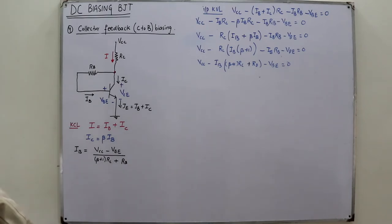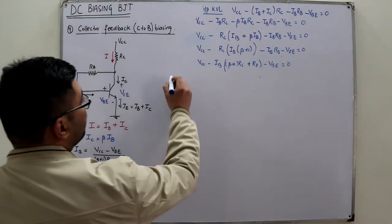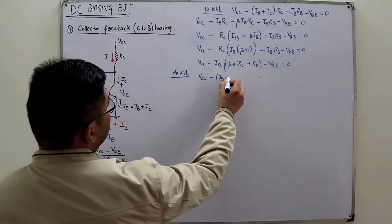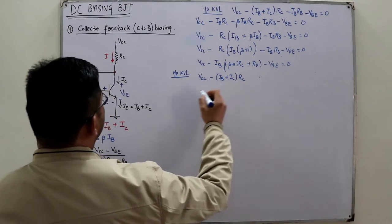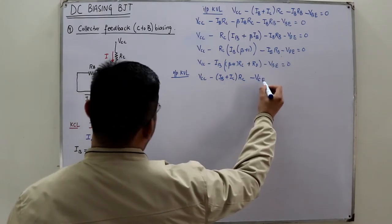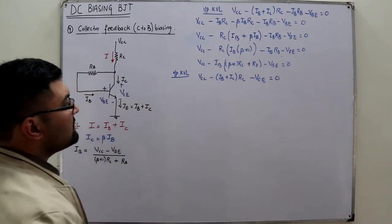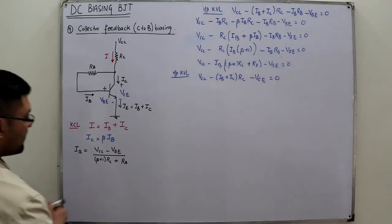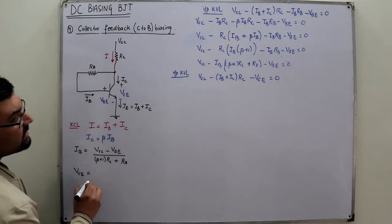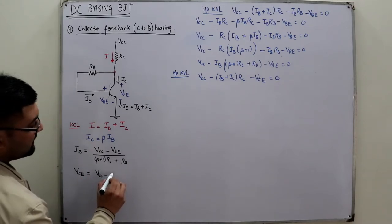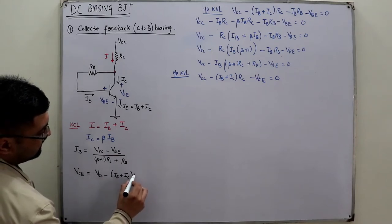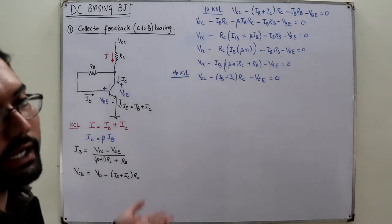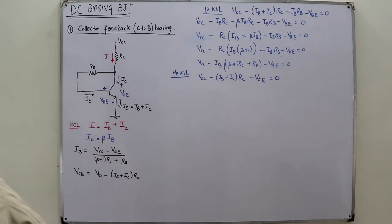Applying KVL to the output loop to find VCE: VCC minus (IB + IC)·RC minus VCE = 0. Since we already have the values of IB and IC, VCE = VCC − (IB + IC)·RC. The Q-point coordinates are IC and VCE — that is everything you need.